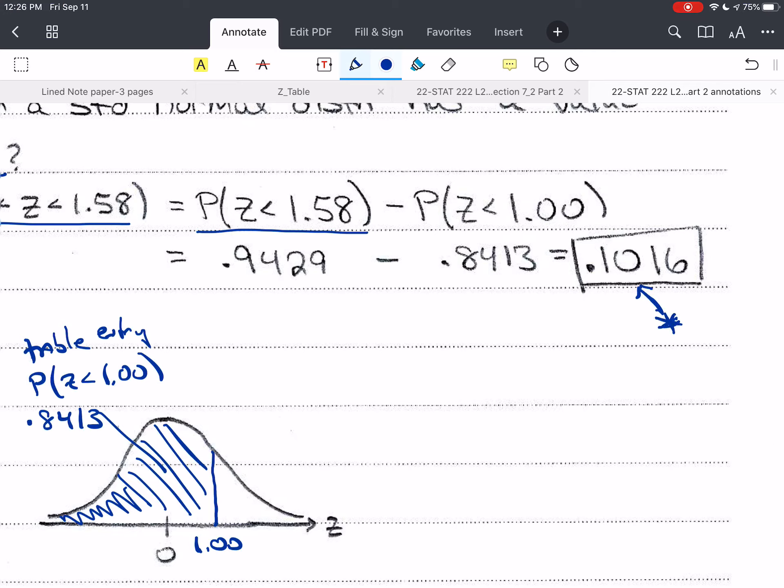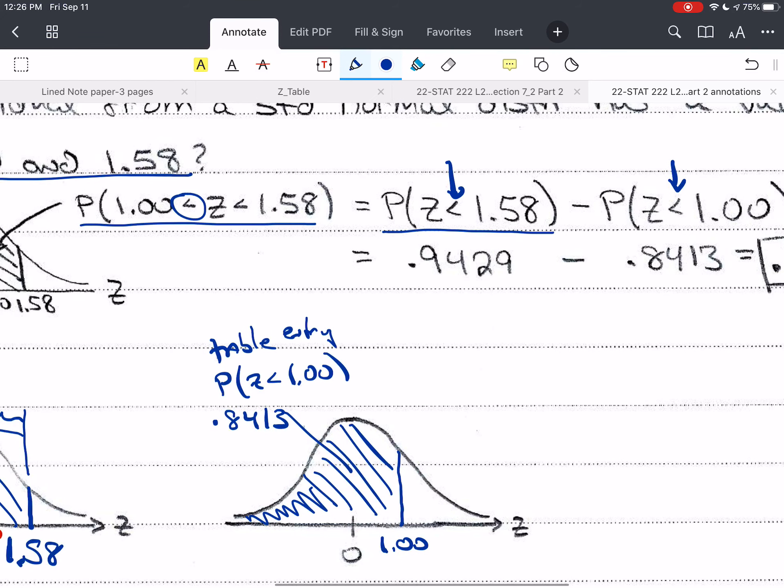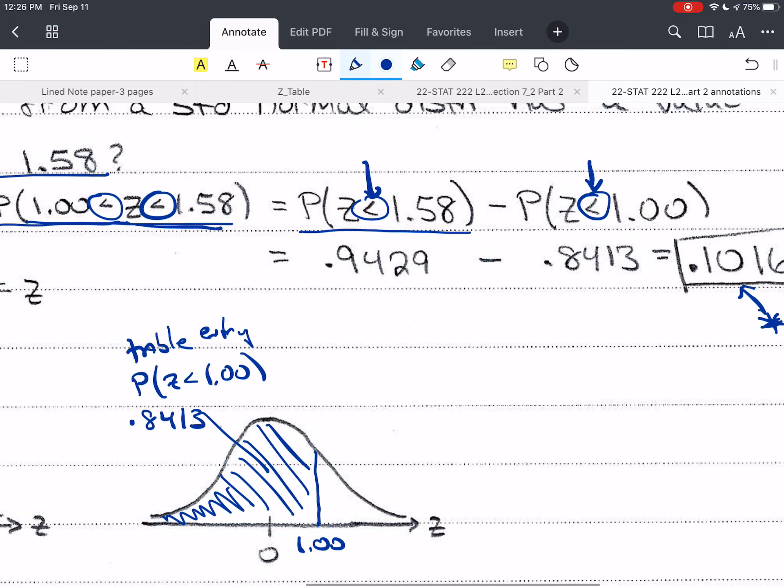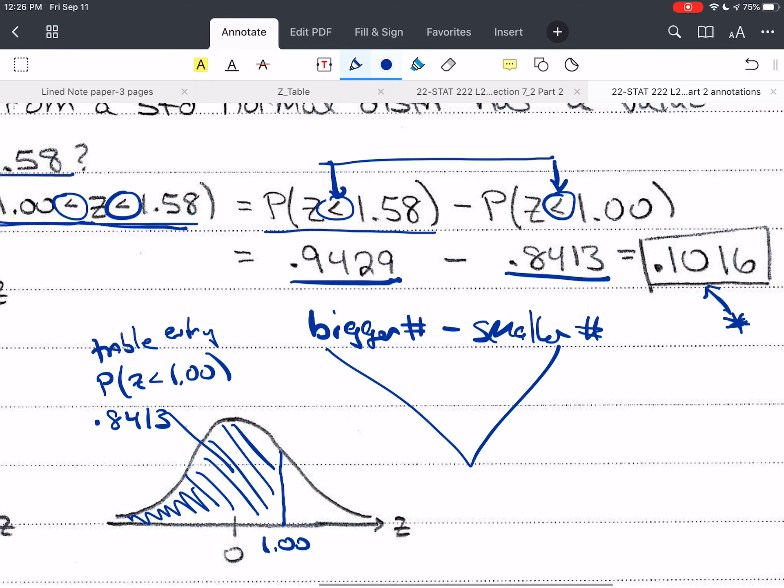Now I want to point out that the signs here are always less than on this side. Just because these are less than, they're both less than, but z of course is greater than 1 and it's less than 1.58. But don't let that confuse you because the only thing we have in our table is less than, less than or equal to or less than. So it's always a less than sign over here. Okay? So we take the bigger number, subtract the smaller number. Bigger number minus smaller number. That's always the case. Always.